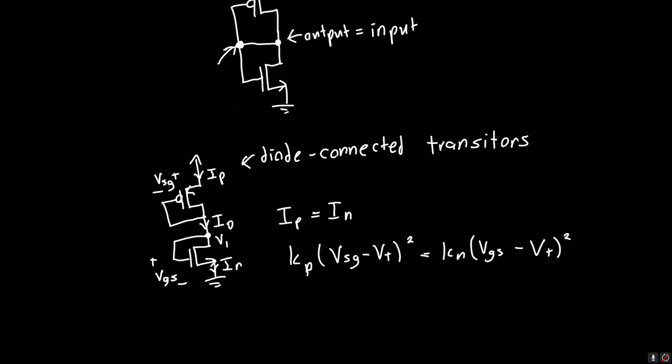We know that VSG is just VDD minus V1. And we know that VGS is just equal to V1, because it's between V1 and ground. So if we continue along these lines, we'll see we get KP times VDD minus V1 minus VT squared is equal to KN times V1 minus VTN squared.